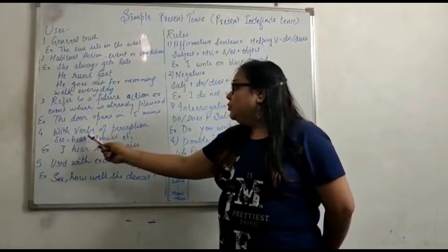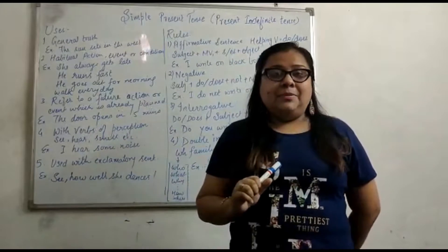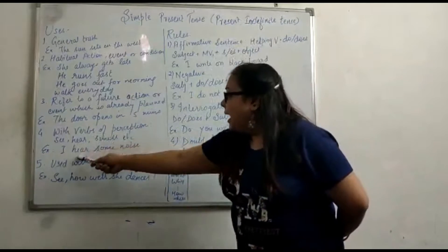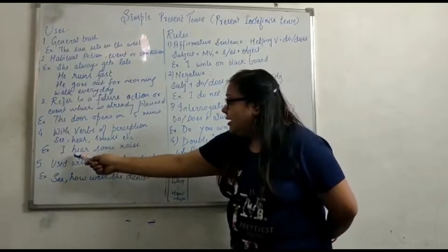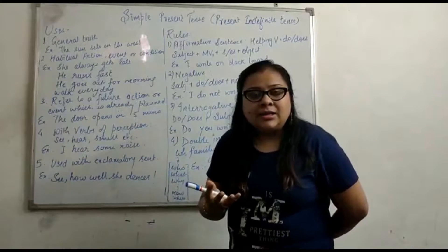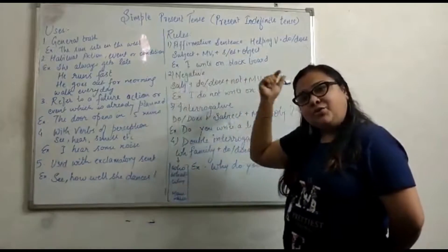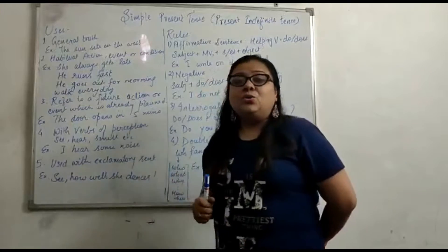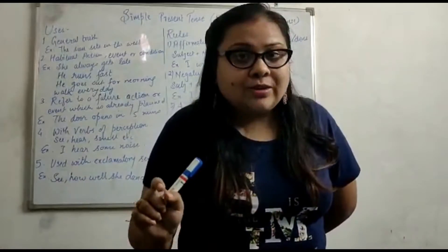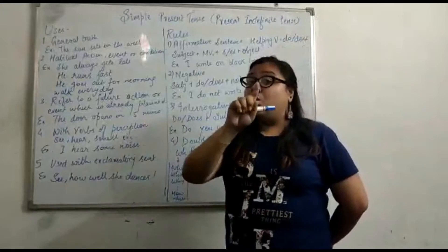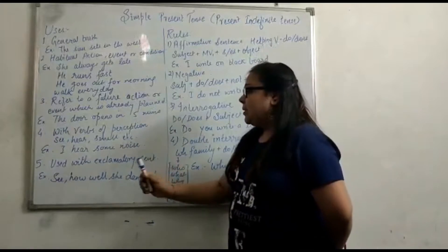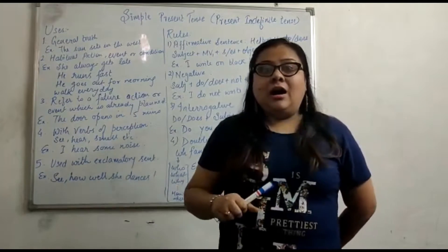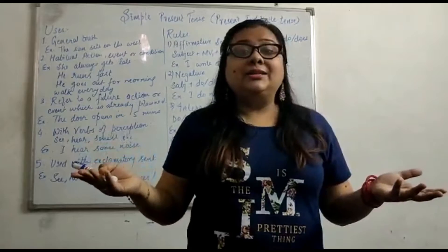Another application is with works of perception. For example: the roses smell good; I hear some noise. Can you see? Hear, smell — these use the first form of the verb. It is also used with exclamatory sentences. For example: see how well she answers; how beautifully she sings.